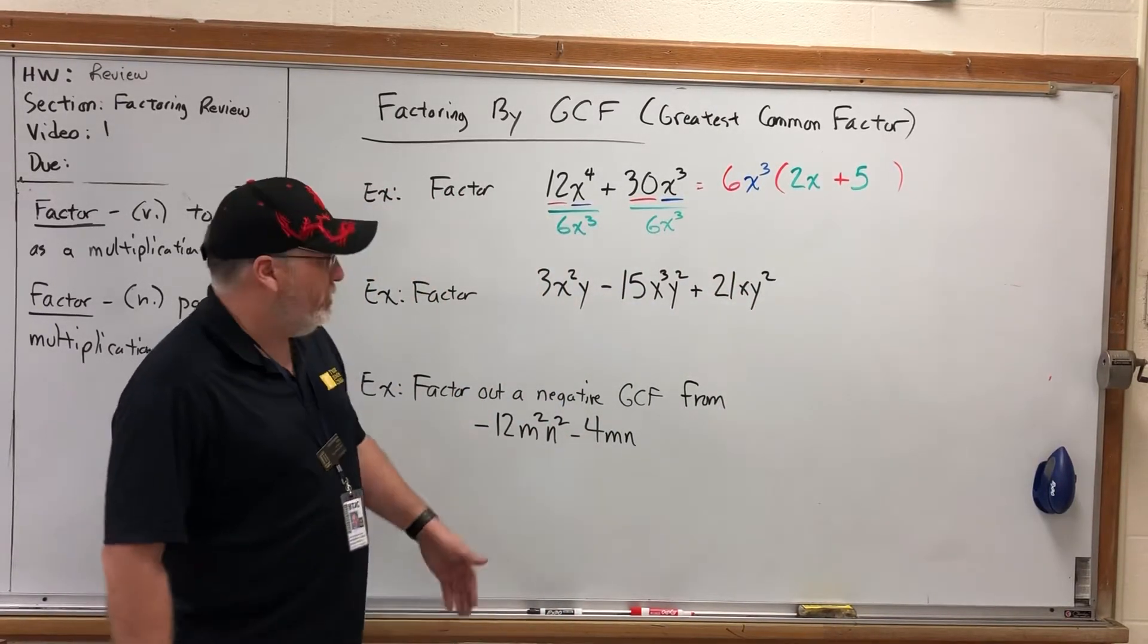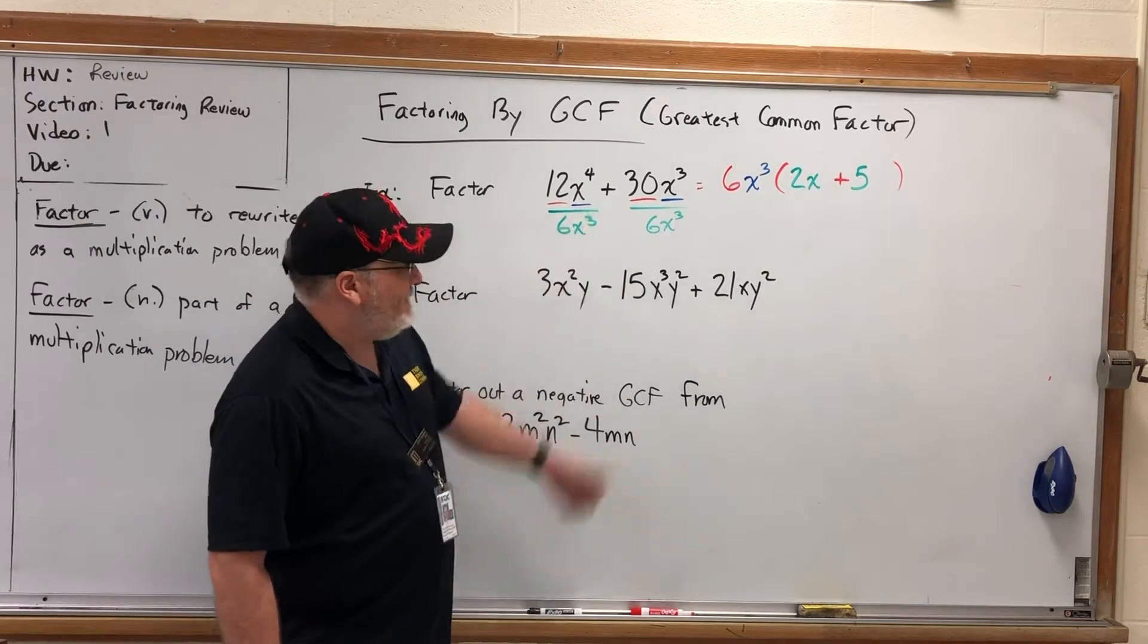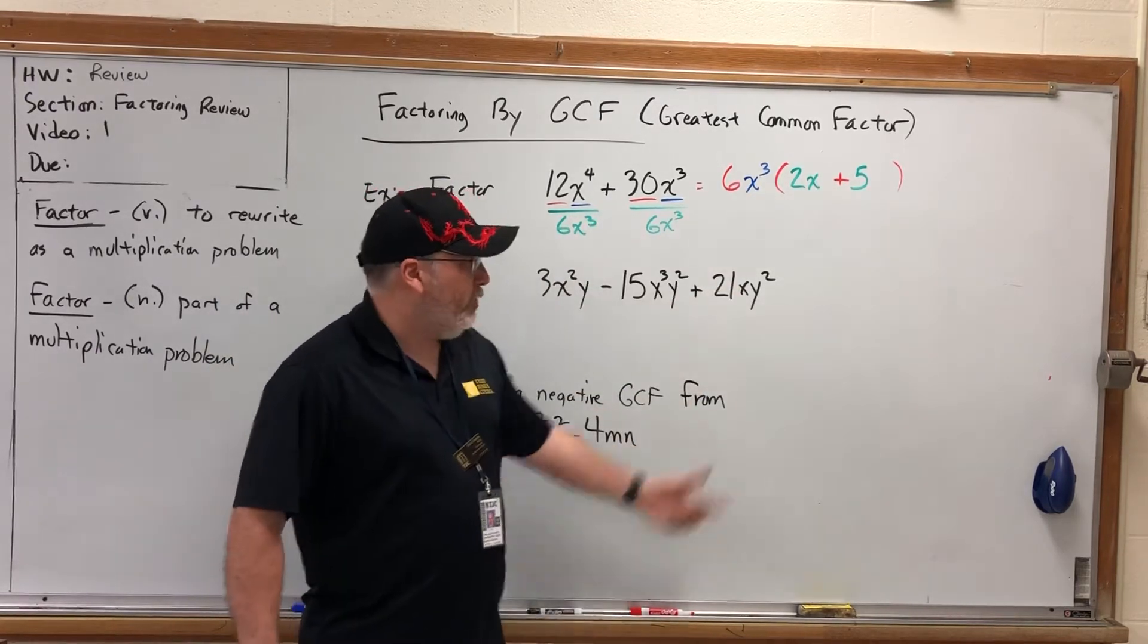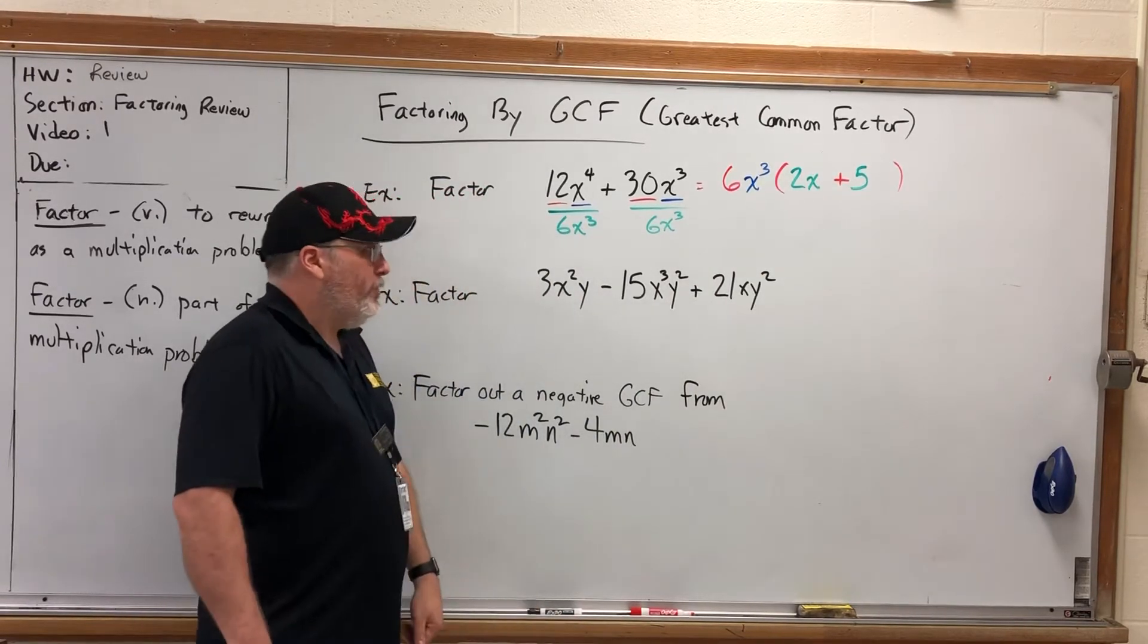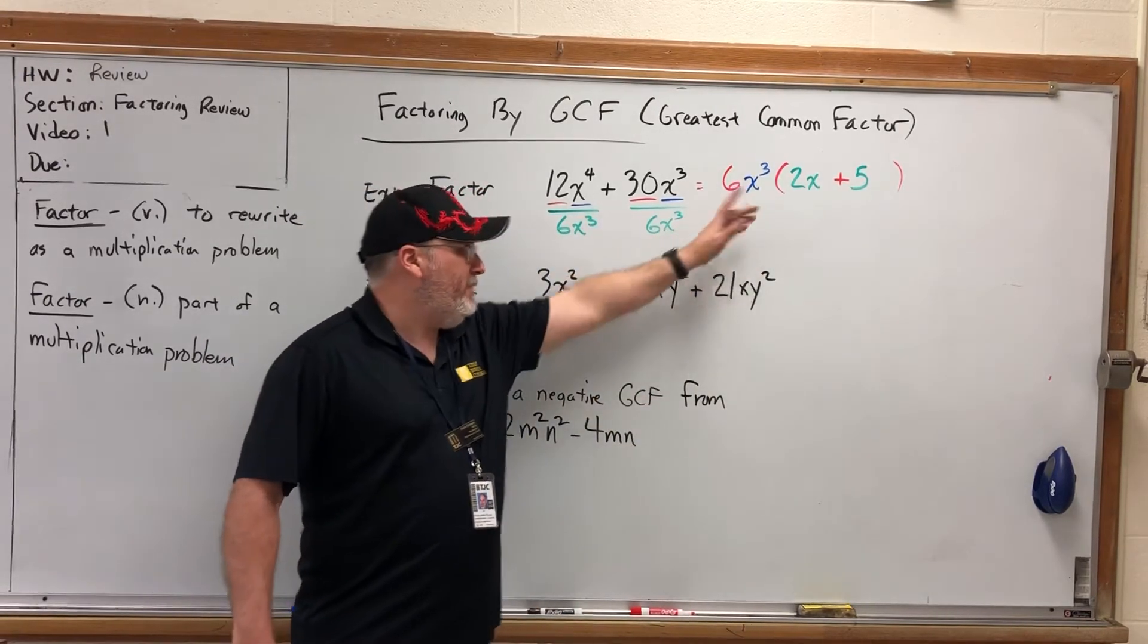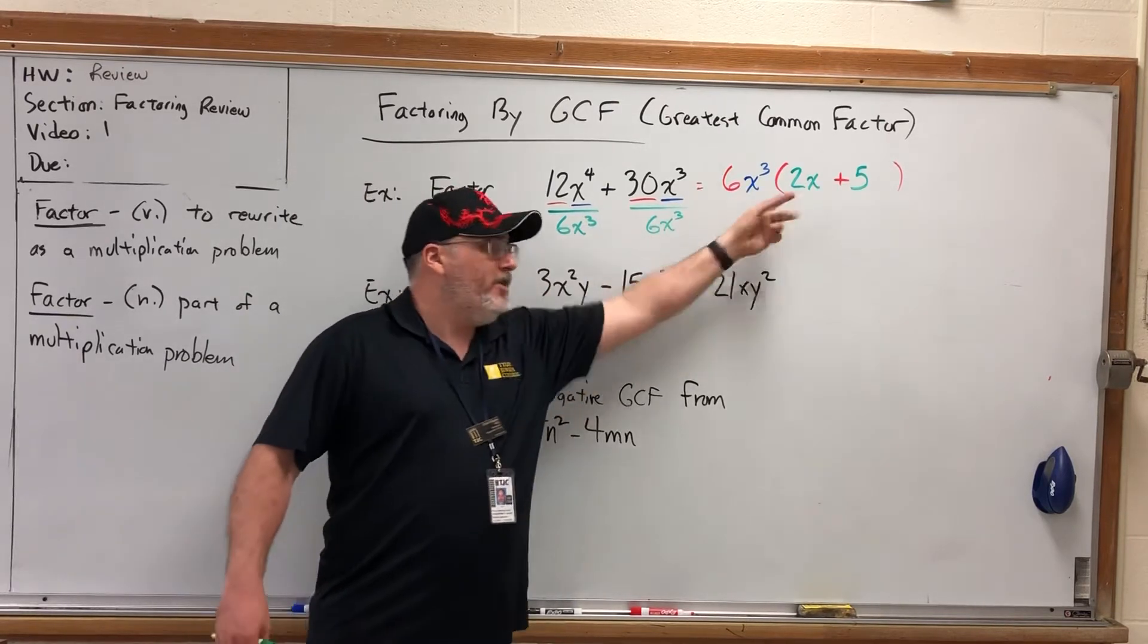Now, this may be a lot of hoopla just to do this GCF problem. Hopefully all of you could look at this and go, I can divide out a 6. I can divide out an x to the third. And when I do, this is what I get. Great. That's the place I would like you to be. But algorithmically, identify the GCF and then you can divide each term by it to see what's left.